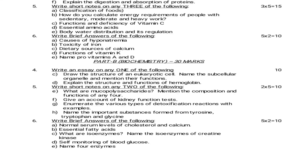Moving on to Biochemistry for June 2013. Essay questions: Draw the structure of a eukaryotic cell, name the subcellular organelles and mention their functions. Explain the structure and function of hemoglobin. Short notes — 5 marks: What are mucopolysaccharides? Mention the composition and functions of any 4. Give an account of kidney function tests. Enumerate the various types of detoxification reactions with examples. Name the important substances formed from tyrosine, tryptophan and glycine. 2 marks questions: Normal serum levels of cholesterol and calcium. Essential fatty acids. What are isoenzymes? Name the isoenzymes of creatinine kinase. Self-monitoring of blood glucose level. Name 4 enzymes.